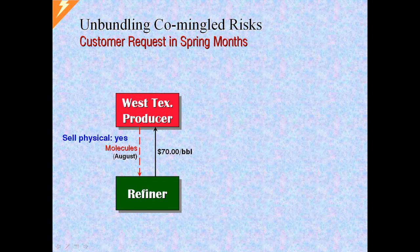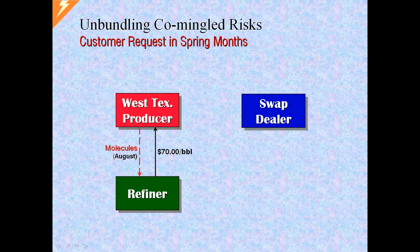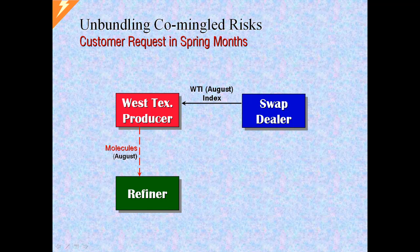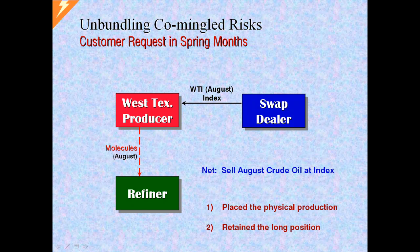The issue is this: we know that his fixed price contract bundles together two component risks. Physical is only one of them; there is also financial. This August contract not only places physical oil, but it also causes the producer to give up its natural long position. Given the producer's expectation for summer prices, this is not desirable. The producer can reacquire the long position by using a swap. The producer will pay away the $70 fixed price and receive in its place the August index for WTI. As $70 is both paid and received, they cancel each other out. On net, the producer is simply delivering crude and earning the August Crude Oil Index. The producer has placed his oil production for August and kept the customer happy, but the swap enabled him to retain the long position that suited his price view.